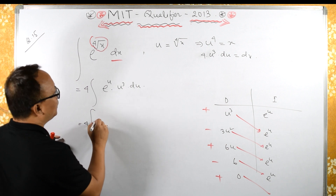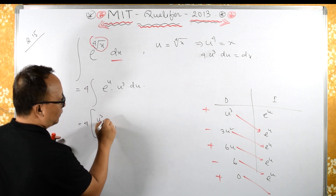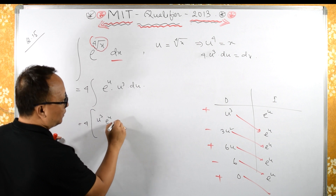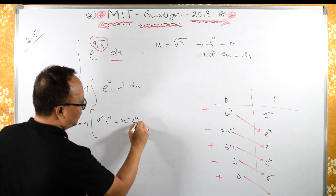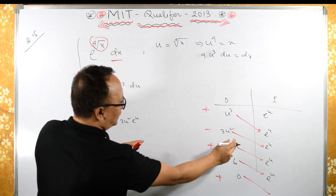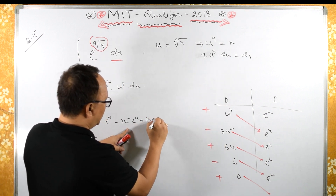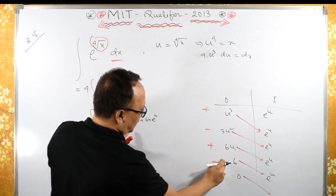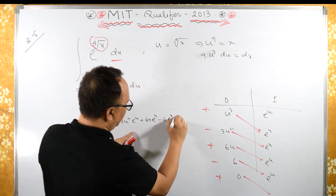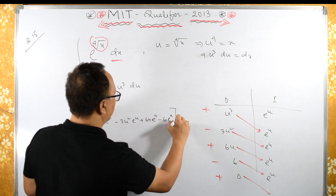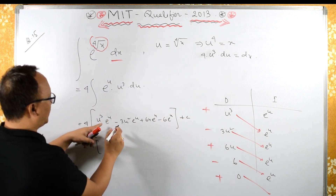So we have u cubed e raised to u, minus 3u squared e raised to u, plus 6u e raised to u, minus 6 e raised to u, plus constant. Taking 4 e raised to u as a common factor outside.